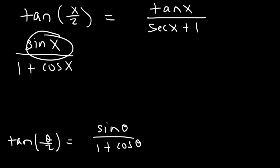Now in order to turn a sine into a tangent, you need to multiply it by 1 over cosine. So whatever you do to the top, you must also do to the bottom.